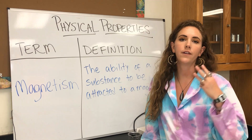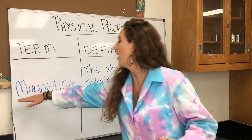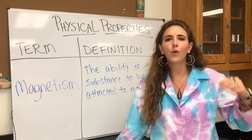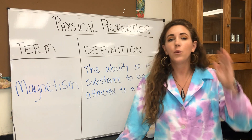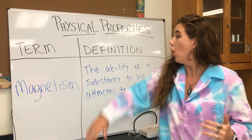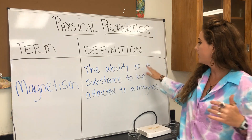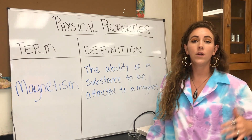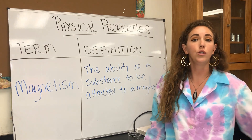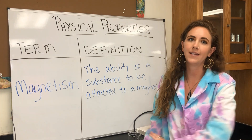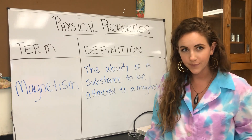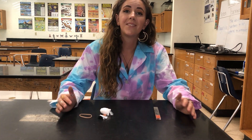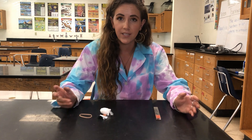Let's quickly talk about our third and final physical property for the day: magnetism. If you're thinking that word sounds a lot like magnet, you're absolutely on the right track. All magnetism is, is the ability of a substance to be attracted to a magnet. We're going to look at what substances are usually attracted to magnets and which ones are not — and it might surprise you.